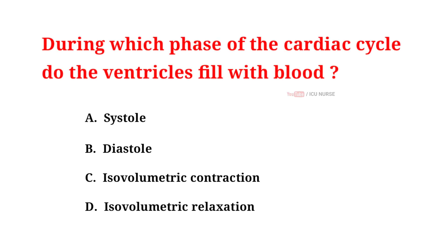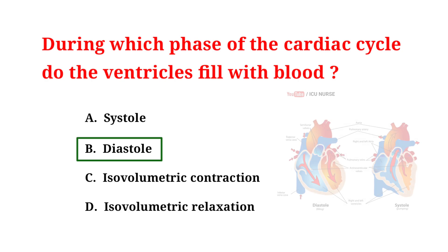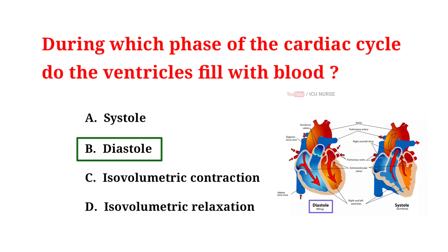During which phase of the cardiac cycle do the ventricles fill with blood? A. Systole. B. Diastole. C. Isovolumetric contraction. D. Isovolumetric relaxation. And the correct answer is B: diastole. The ventricles fill with blood during the diastole phase of the cardiac cycle.